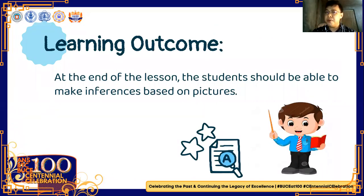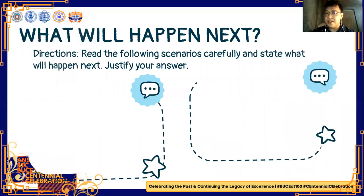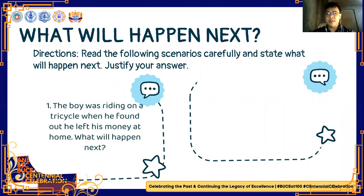Before that, let's recall your knowledge about making inferences by doing this activity: what will happen next? Read the following scenarios carefully and state what will happen next and justify your answer. The boy was riding on a tricycle when he found out he left his money at home. What will happen next? The boy might go back home to get his money to pay for the driver. He needs to go back because if he does not, he has no money to pay the driver.